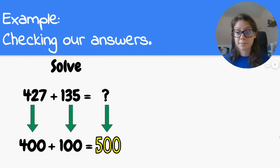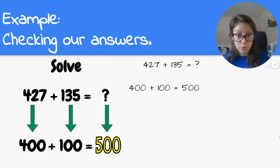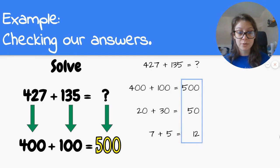So let's fix it. 427 plus 135 equals something. 400 plus 100 equals 500. 20 plus 30 equals 50. 7 plus 5 equals 12. So now I'm going to add up those sums that I just found. 500 plus 50 plus 12. So when I add those together, I get 562.